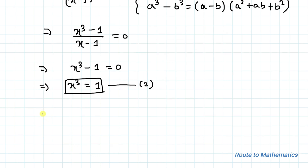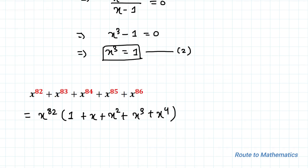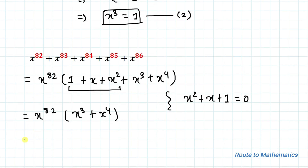Now I'll simplify the given expression. I will take x to the power 82 as common, leaving us with x to the power 82 times (1 plus x plus x squared plus x cubed plus x to the power 4). From equation 1, x squared plus x plus 1 equals 0, so those terms become 0. We have x to the power 82 multiplied by (x cubed plus x to the power 4).